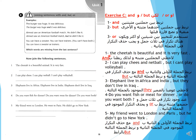Exercise C, number 1: The cheetah is beautiful and very fast. We joined with 'and' because both sentences are positive. Number 2: I can't play chess and netball — we remove the repeated part. I can't play chess and netball.